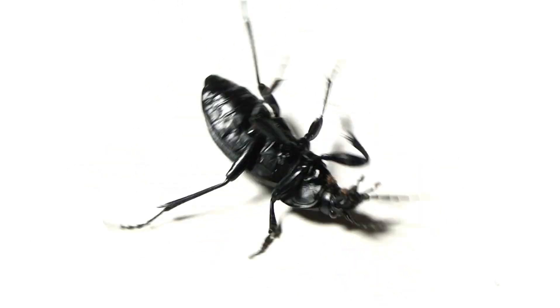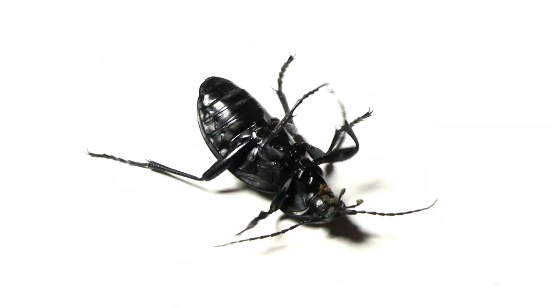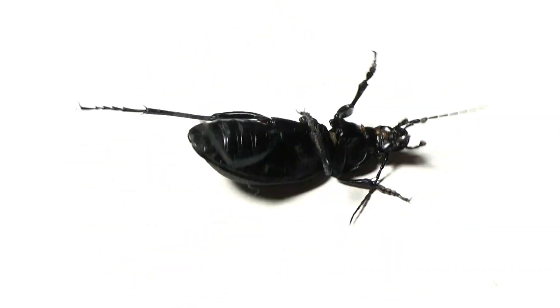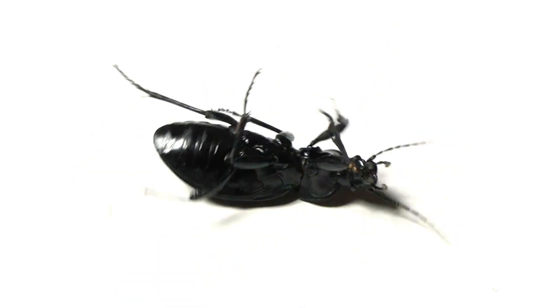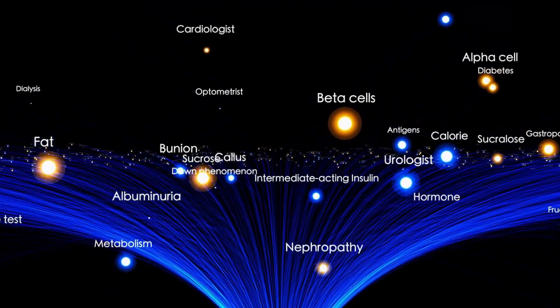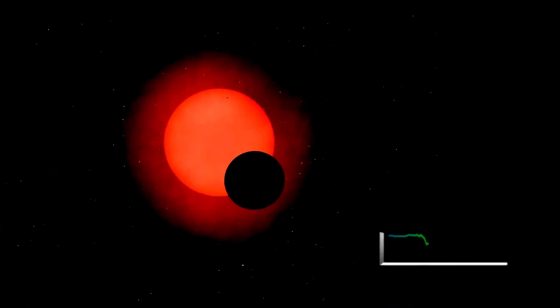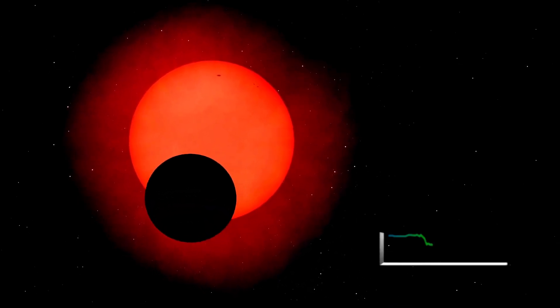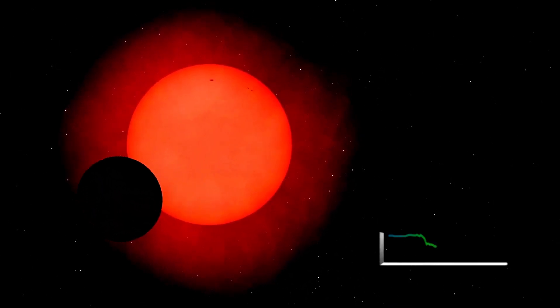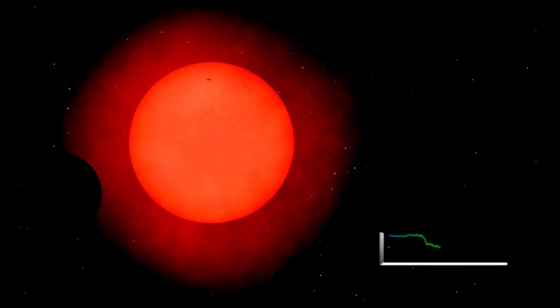While there is excitement around Betelgeuse's potential to become a supernova, it's important to note that this recent increase in brightness doesn't necessarily signal an imminent explosion. Red supergiants are notorious for their unpredictable behavior, and Betelgeuse could simply be experiencing one of its many phases of instability. However, the extraordinary 250% increase in brightness suggests that something significant is happening within the star.